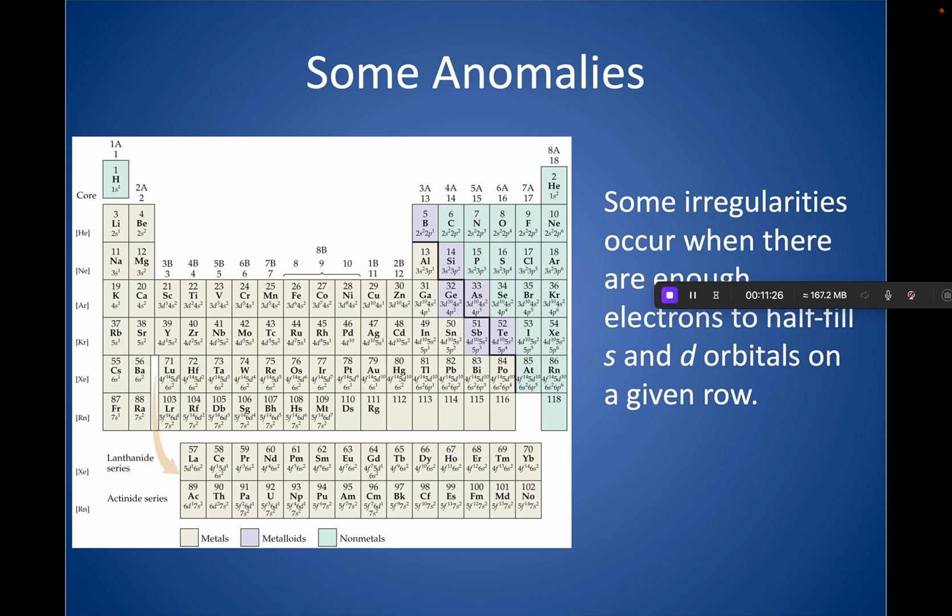And just as a heads up, this is beyond the AP. You used to have to know some of these irregularities, but they took it off the exam. A lot of this, in the D and F orbitals, there's a lot of irregularities that happen that do kind of break that order of filling the electrons in the order that we would predict.